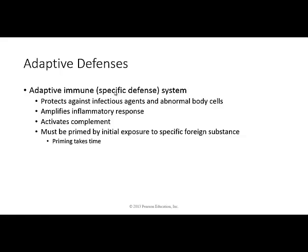When we talk about amplifying the inflammatory responses, if we have infection, not only do we have the innate defenses, but we also have the adaptive defenses that will add to that immune response and make it very effective. There's also this protein complement — that's part of the adaptive immune system. It's a protein found in the plasma, and it's not activated until the cells of the adaptive immune system activate complement. We'll touch on that briefly, as it's more of an advanced concept.